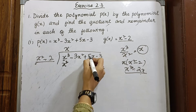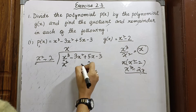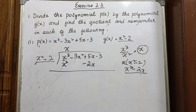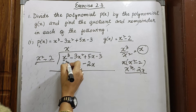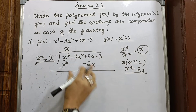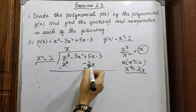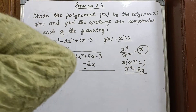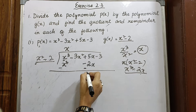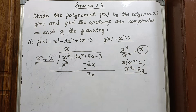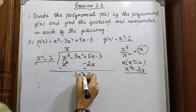We write x³ minus 2x. Now x³ minus x³ cancels to give 0. We get minus 5x, and minus and minus is plus, so plus 2x gives 7x. We bring down minus 3x², giving us minus 3x² plus 7x minus 3.